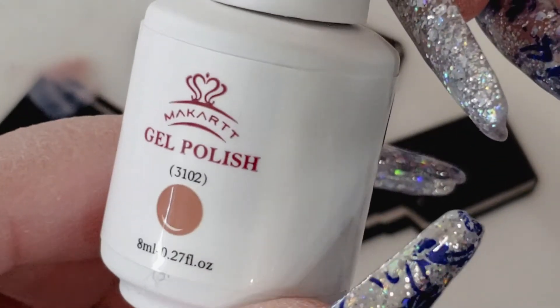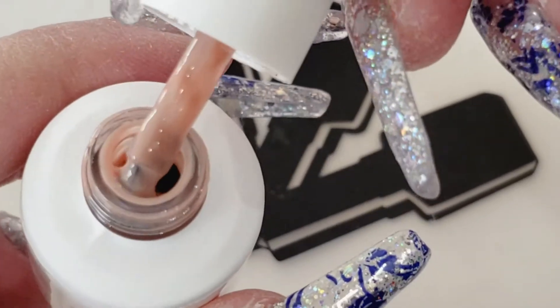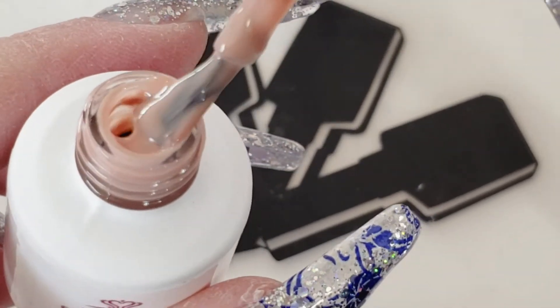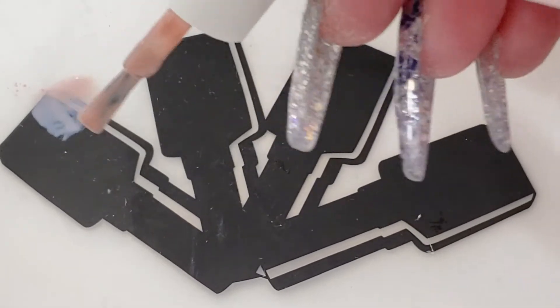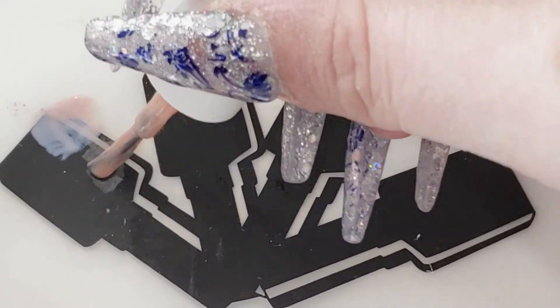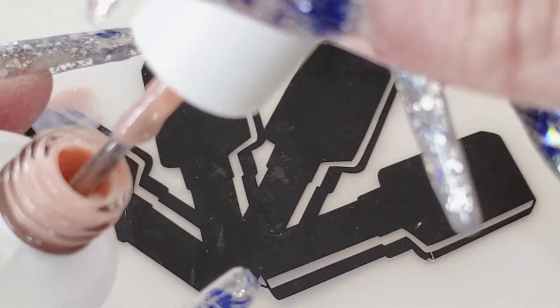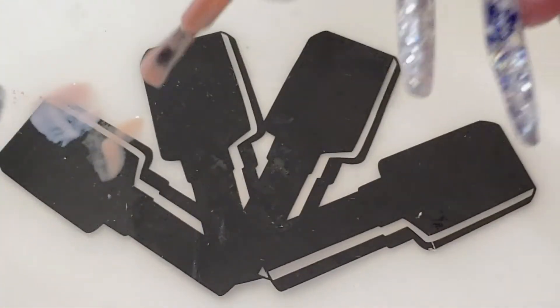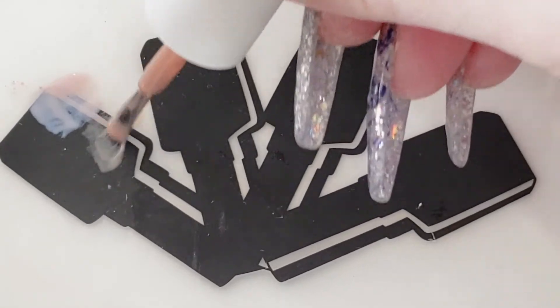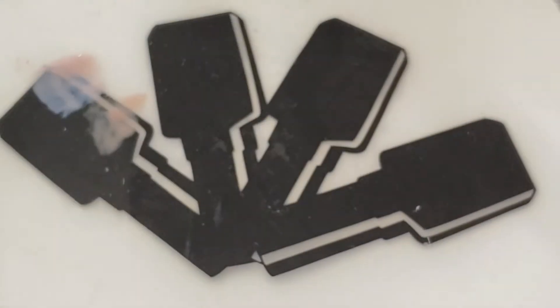Next, we have 3102. And this looks more like a beachy nude. There we go. Look at that. This is gorgeous. This is like an everyday color. If it will even show up. Don't know if you can see that on the black. Let me put a little more on there. These colors look a little bit more sheer, so you're going to have to layer them up. But very pretty colors.